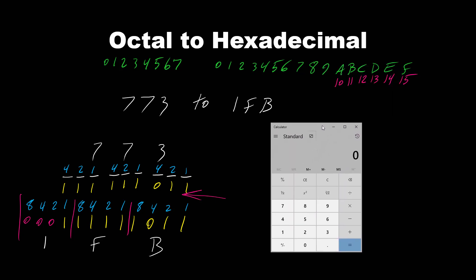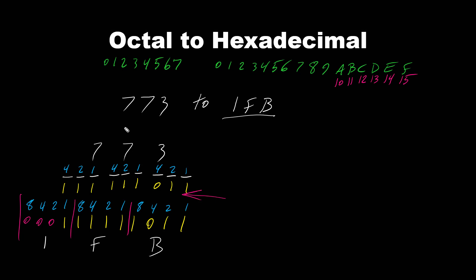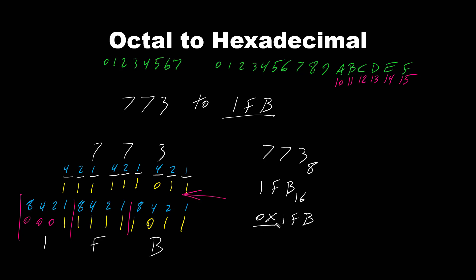Let's verify with the calculator. Change to programmer view, select octal, and enter 773. The calculator shows hexadecimal 1FB — confirmed. These numbers are sometimes written as 773 with subscript 8 (indicating base 8 / octal system) and 1FB with subscript 16 (indicating base 16 / hexadecimal). In hexadecimal, you may also see the prefix 0x, written as 0x1FB, which simply indicates the following number is hexadecimal.